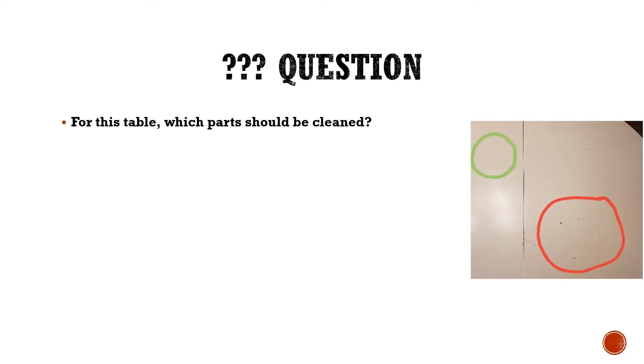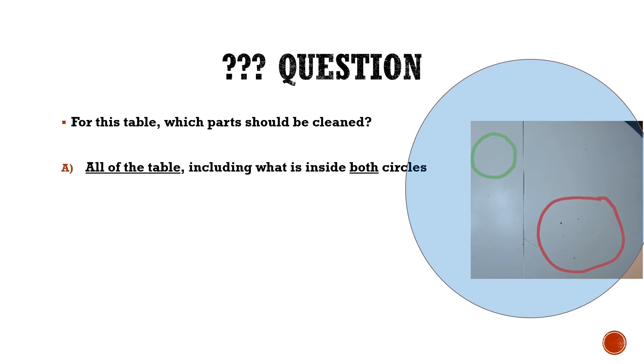Question. For this table, which parts should be cleaned? Is it A, all of the table, including what is inside both circles?